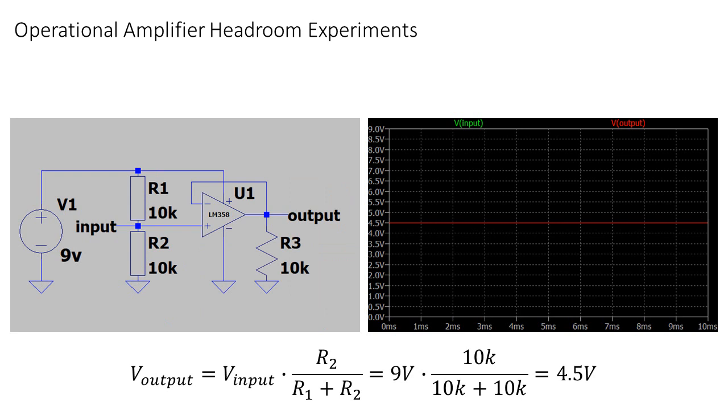I've set the voltage divider so the input voltage is 4.5V. If we check both the input and output, it's visible how the voltage is exactly the same. The green input voltage is not visible because the red output voltage is exactly on top of it.